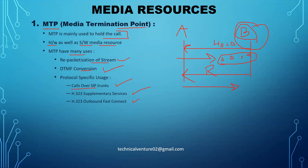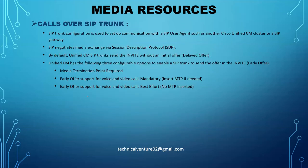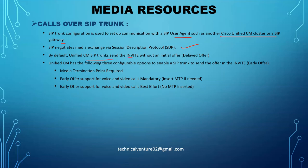Now let's discuss calls over SIP trunk. SIP trunk configuration is used to set up communication between SIP user agents — your CUCM cluster or a SIP gateway. It negotiates media exchange via SDP — session description protocol — which contains your media information: IP addresses, codecs, numeric profiles, and conditional things. By default, a SIP trunk sends the invite without an initial offer, meaning it is a delayed offer. Early offer means the phone sends its SDP messages in the first invite itself.